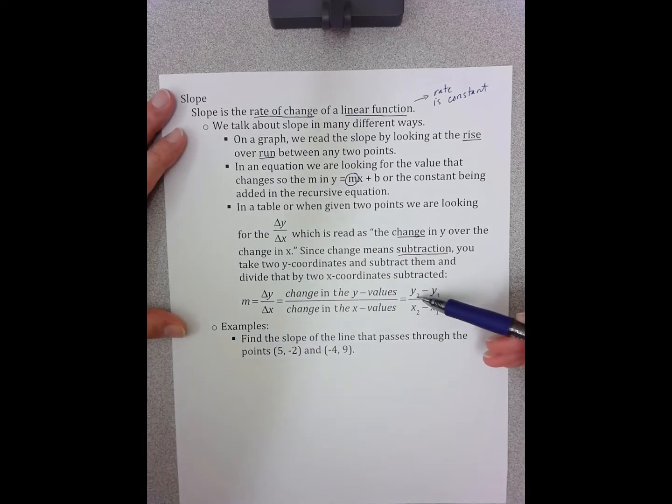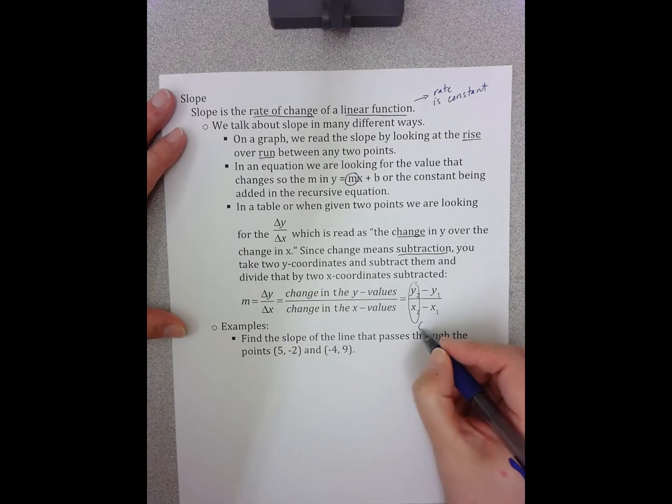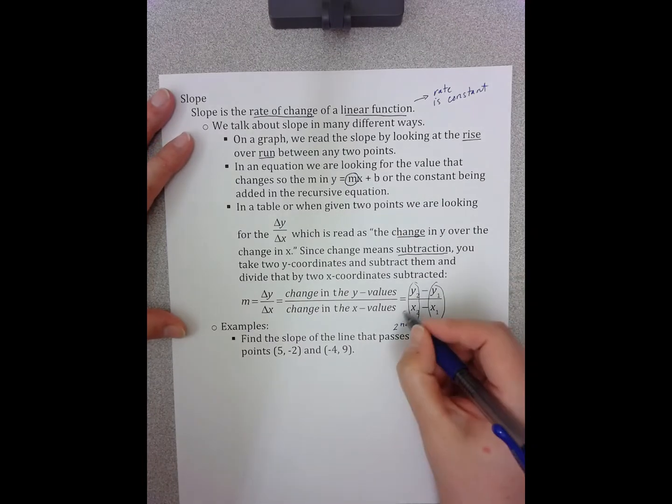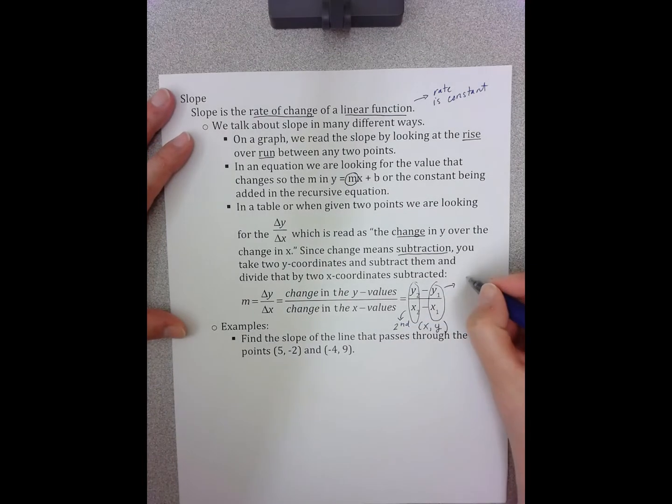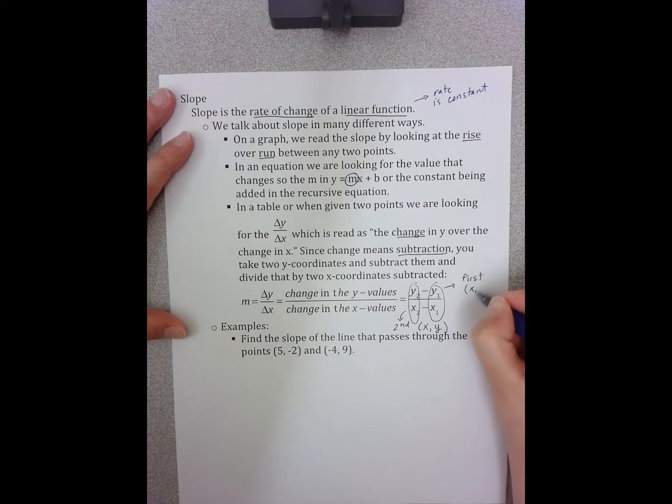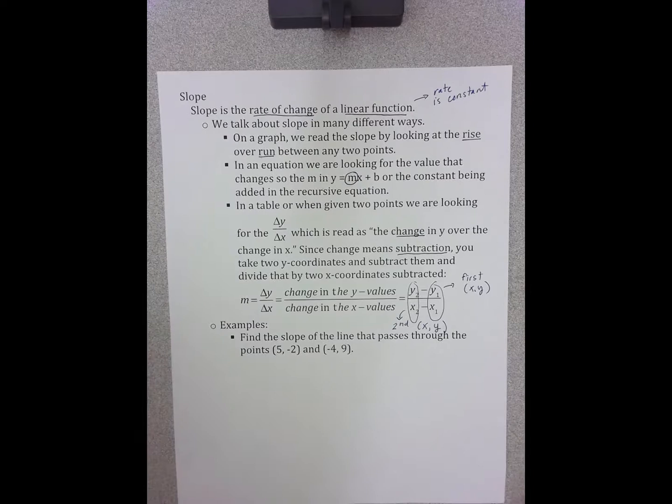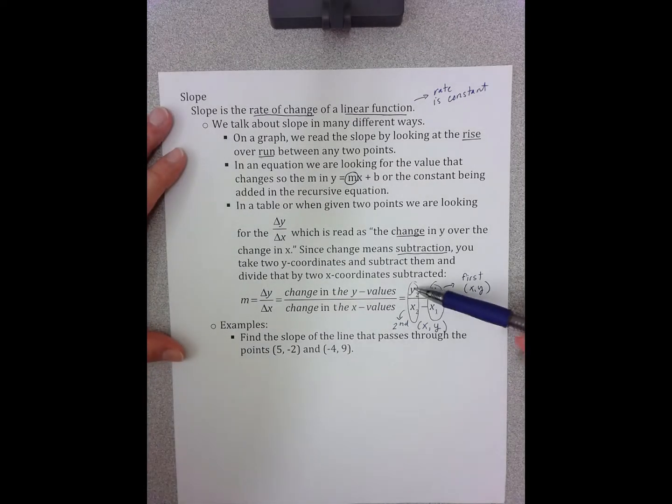The notation here refers to the fact that this is one point, an x comma y, and this is the second x comma y, and this one is the first x comma y. It doesn't matter which one you pick to be first or second, as long as you are consistent that whatever y you pick first, you're picking the corresponding x to go first in the denominator.